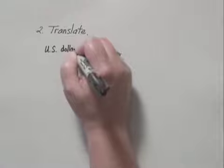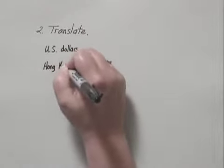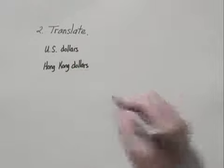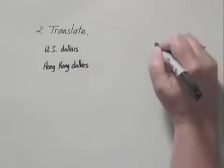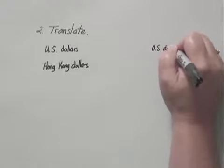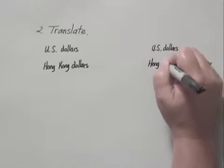We have U.S. dollars, Hong Kong dollars. And then we're going to have our proportion, and make sure on the other side, the other ratio, we also have U.S. dollars in the numerator and Hong Kong dollars in the denominator.